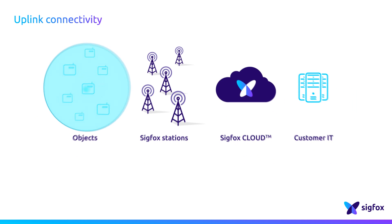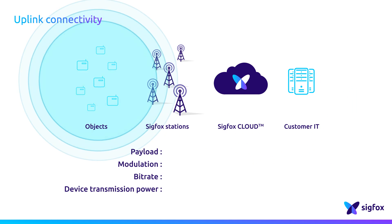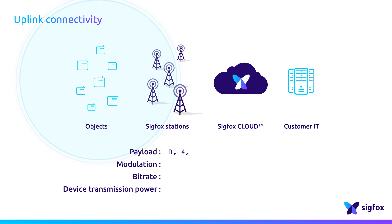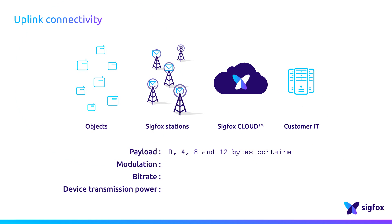In terms of the technical aspects, the payload data that can be put in a SIGFOX message ranges from 0 bits to 12 bytes. The Uplink modulation is DBPSK, and the bitrate can be 100 bps or 600 bps.